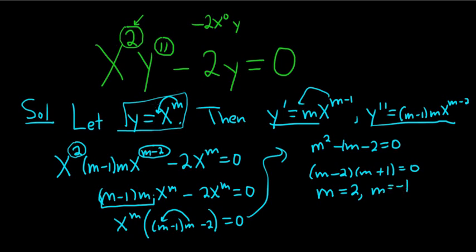But we said that y was x to the m. So whenever you have distinct real roots, the solution to the Cauchy-Euler differential equation looks like this: c1 x to the m1 plus c2 x to the m2.